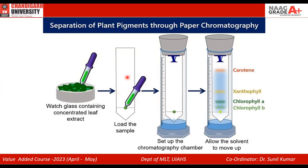Based on this simple technique, we have many branches of separation techniques. Rather than using paper, if we use gel, that is called gel chromatography. If you keep that gel in a cylindrical tube, it becomes column chromatography. And rather than using water, if you use gas to separate the molecules, that is called gas chromatography.